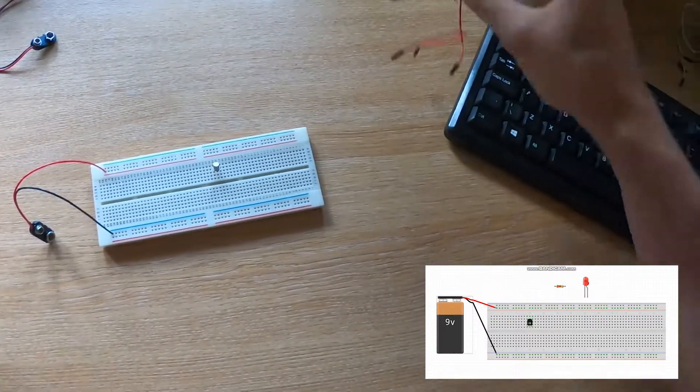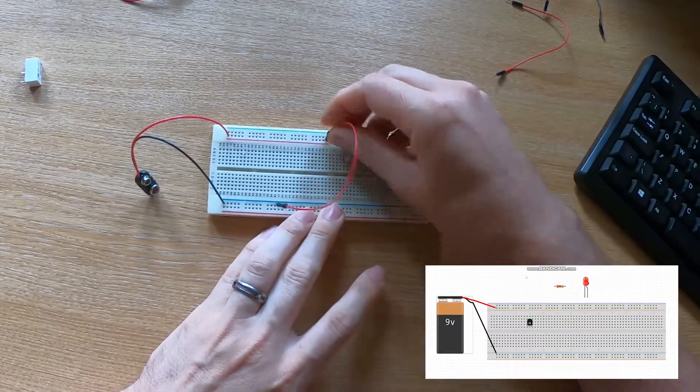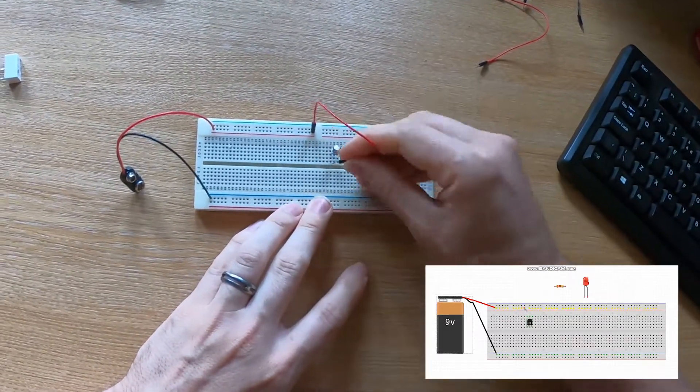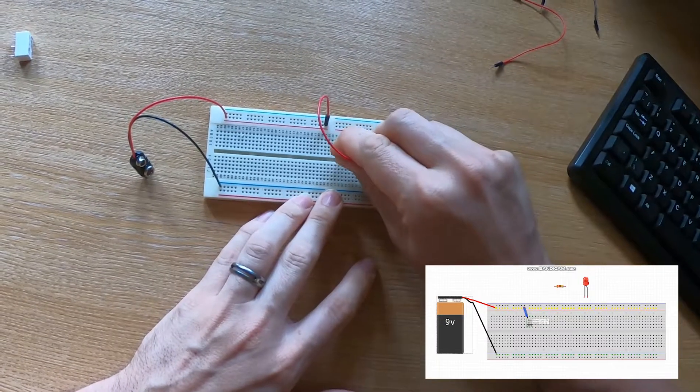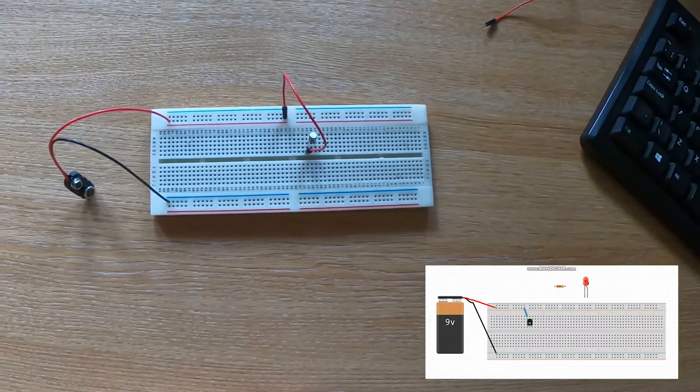Then what we're going to do is we're going to take a few wires. Now we want to connect the positive from our power rail to our collector. Now that's the pin that does not have the tab on the top hat of the transistor.